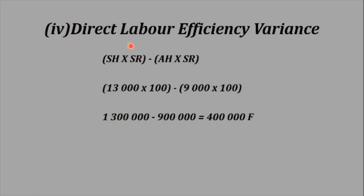Four: the direct labor efficiency variance. The formula is SH × SR minus AH × SR. The standard rate is common to both. The standard hours are greater than the actual hours, so we get a favorable variance again — 4,100,000 favorable.